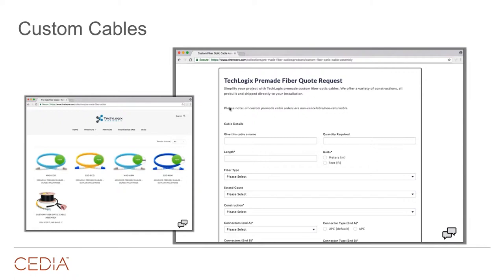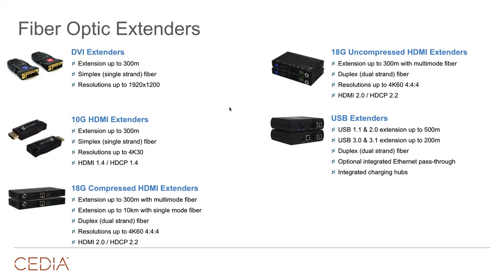This is an area where Techlogix has carved out its niche — not just bulk fiber or premades, but custom fiber lengths. For integrators new to fiber, you can start turn-keying installations for customers right away. There's a lot of margin in it, it's easy to get started, and we're really dealing with only two different types of connectors. Worst case, you can adapt them in the field for two or three bucks.